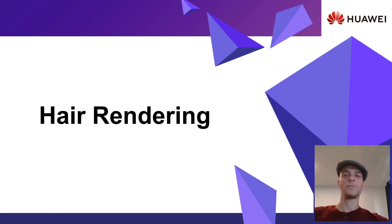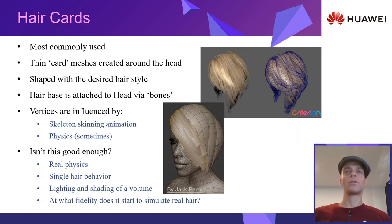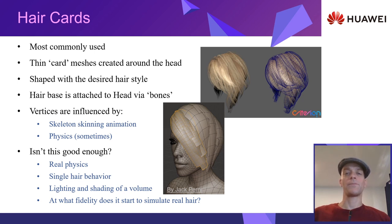As one can imagine, hair is not an easy problem to solve. It is extremely dynamic, contains tens of thousands of individual strands, and its lighting is far more complex than anything we presented thus far. This is the main reason why most TV series, games, and even movies are still using what we call the card-based approach. In this simplified approach, the modeler creates many semi-transparent geometric cards around the head to form the shape of the hair. The cards are attached to the head and, depending on the case, might simulate animation and physics for added realism.